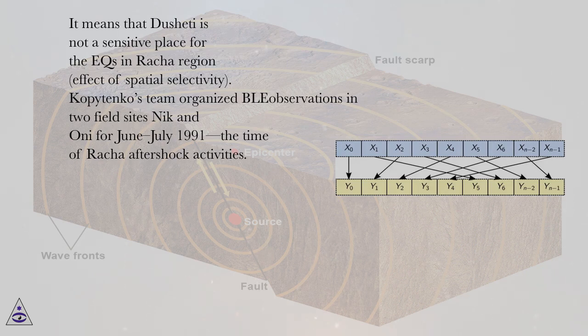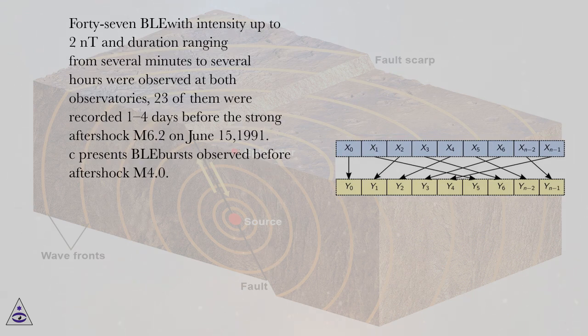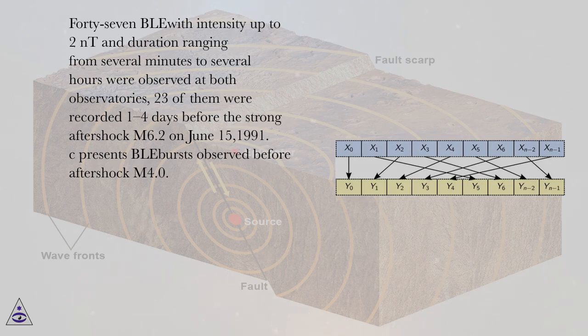Kopytenko's team organized BLE observations in two field sites Nik and Oni for June to July 1991, the time of Racha aftershock activities. 47 BLE with intensity up to 2 nT and duration ranging from several minutes to several hours were observed at both observatories, 23 of them were recorded 1 to 4 days before the strong aftershock M6.2 on June 15, 1991.